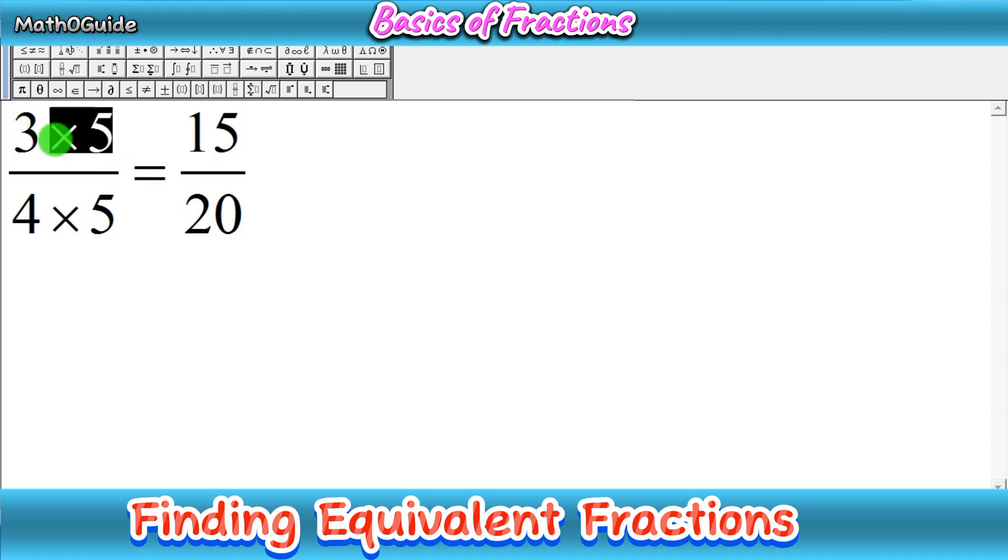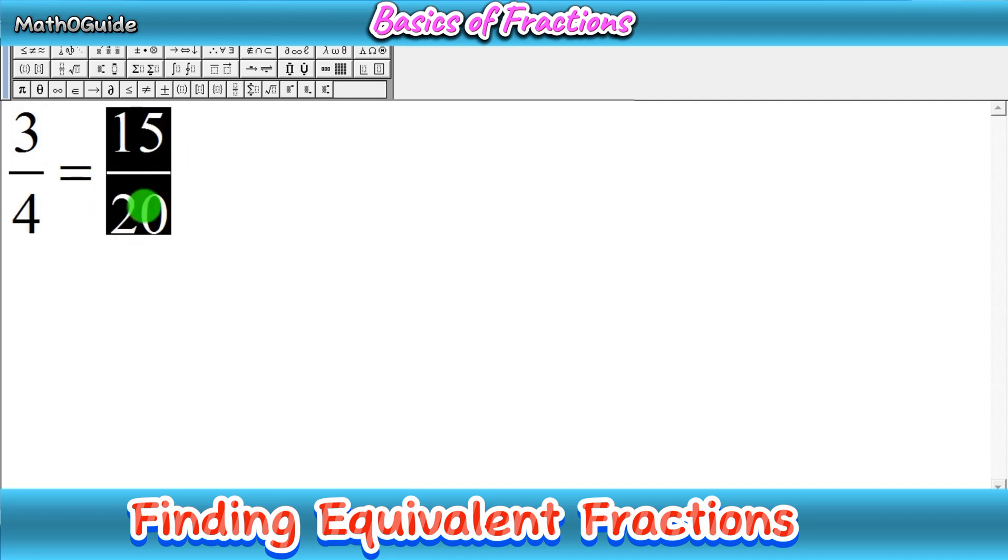We now have the complete equivalent fraction: 3 over 4 is equal to 15 over 20. These fractions are looking different, numerators are different, denominators are different, but they have the same value. If you simplify this fraction 15 over 20 you will get 3 over 4.